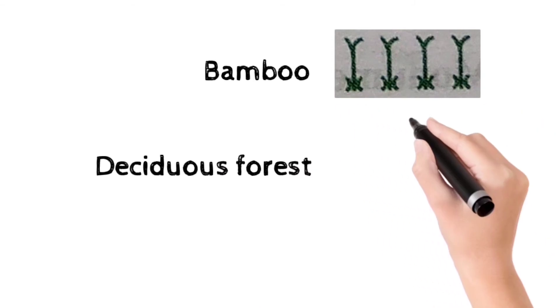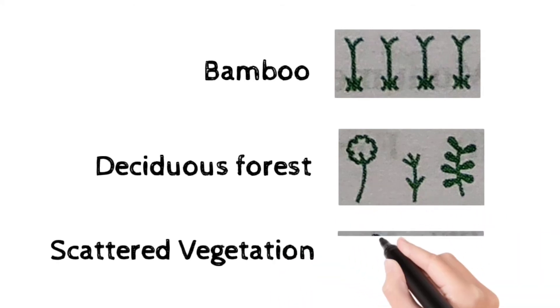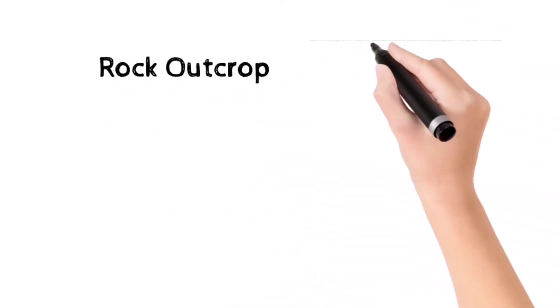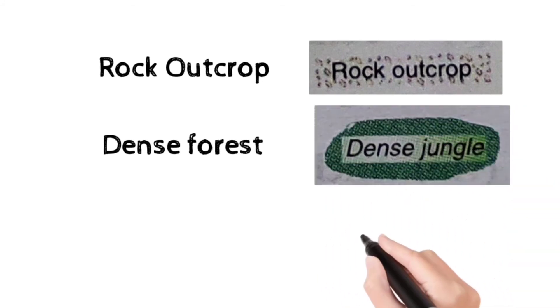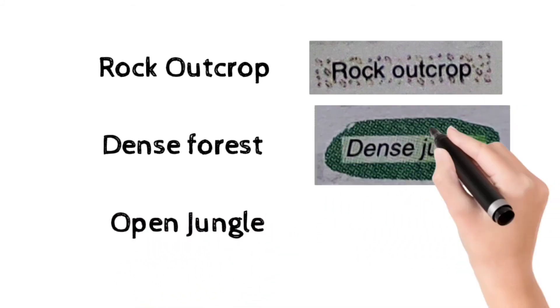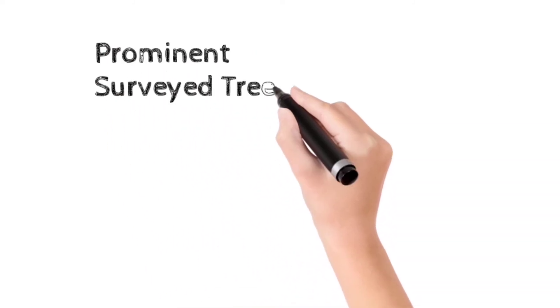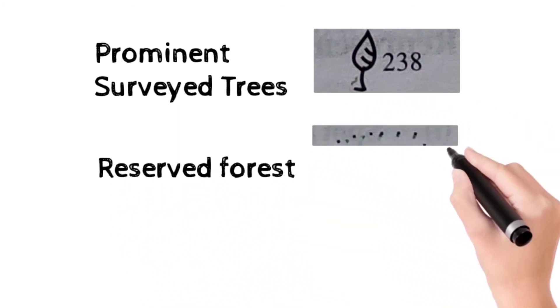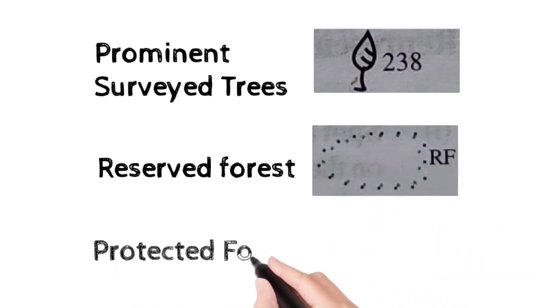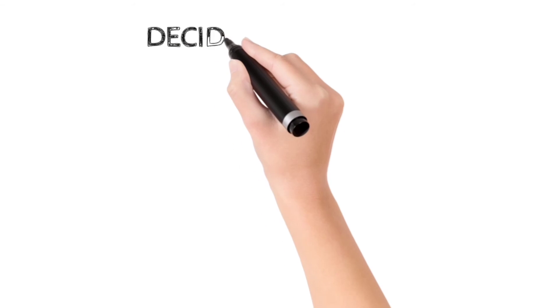Deciduous forest is the most widespread vegetation of India. In the case of scattered vegetation, trees and shrubs are widely spaced on the map, indicating a region of moderate to scanty rainfall. Rock outcrop means a piece of rock juts out of the main rock, along with open scrub and scanty desert-type vegetation; it is denoted by the words 'rock outcrop.' Dense forest indicates a region of heavy rainfall, shown on the map as 'dense jungle.' Open jungle is indicative of moderate rainfall. Prominent survey trees are shown in black and have numbers on their trunks — they serve as landmarks and are not allowed to be cut. Reserved forests are areas where trees are not allowed to be cut, and protected forests are planted as shelter belts to act as barriers against wind and running water, preventing soil erosion and the shifting of sand dunes.